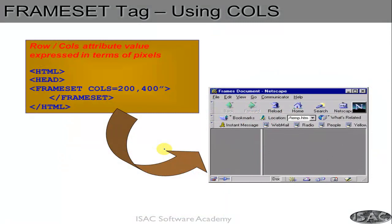Let us see one example. Inside the HTML head, you put the frameset — no body tag is required for frameset. Here I am saying please create frame sets with two columns: first is 200 pixels and the other is 400 pixels. So this column is 200 pixels wide and this one is 400 pixels wide.